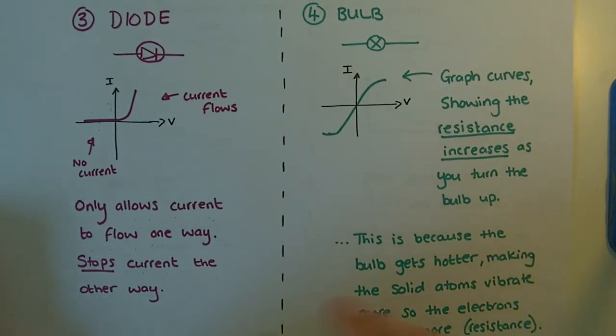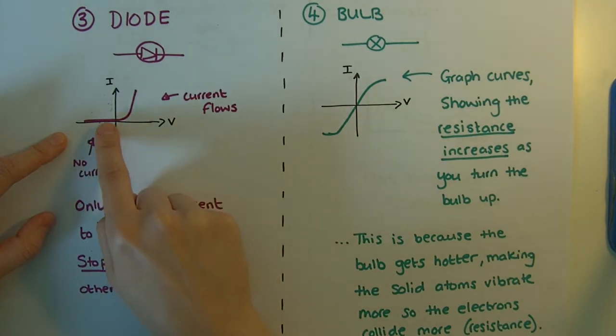Number three is a diode. This is the symbol and this is the graph. Let's have a look at this graph.